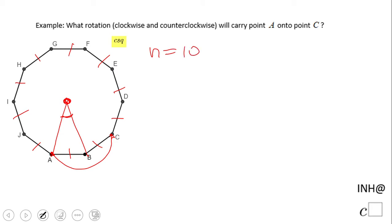That central angle is going to be 360 degrees divided by 10, which is 36 degrees. So this angle is 36 degrees. In order to go from point A to point C, we need one more 36 degrees.